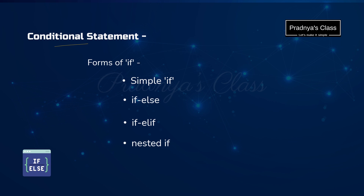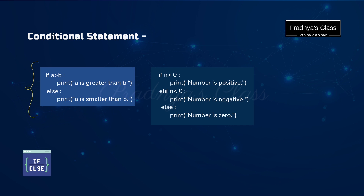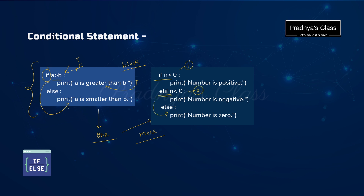Now we concentrate on conditional statements. There are four types, but we focus on if-else and if-elif. We write 'if' followed by a condition with a colon to create a block. If the condition is true, it executes the if block; if false, it goes to the else block. If we have more conditions, we use elif — first condition with if, other conditions with elif, and finally the else block.